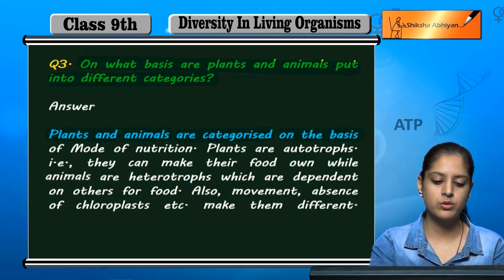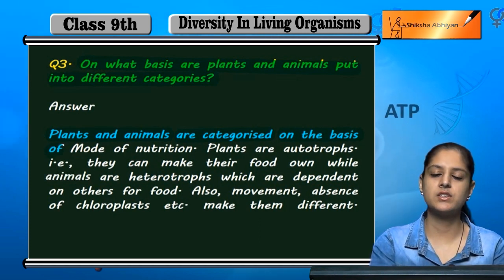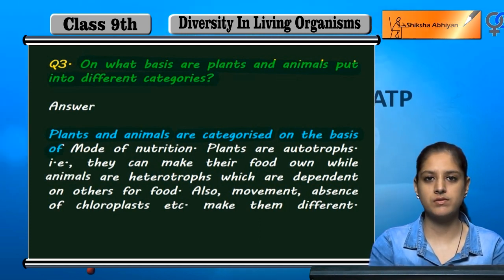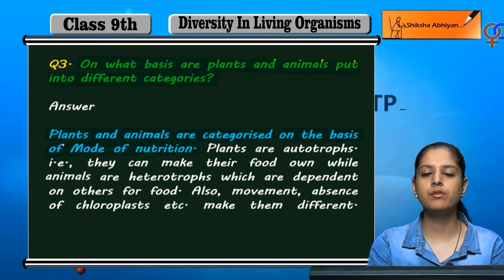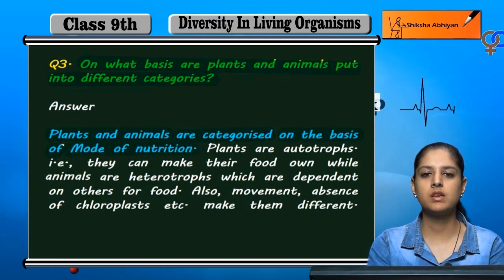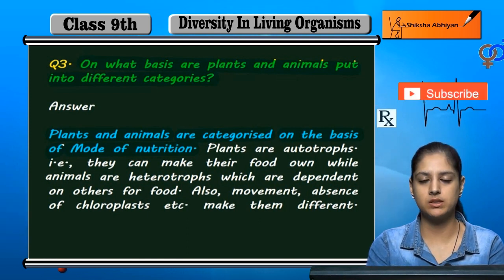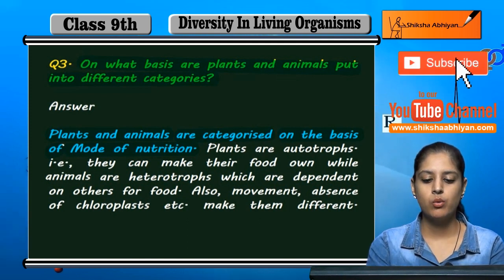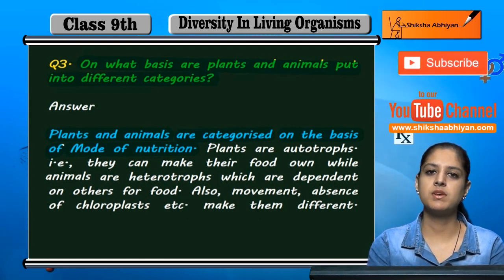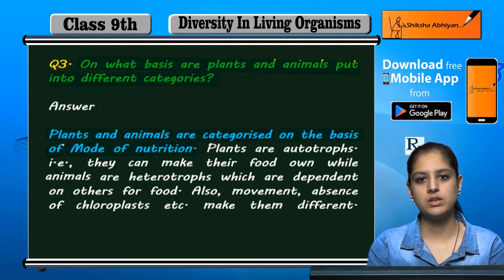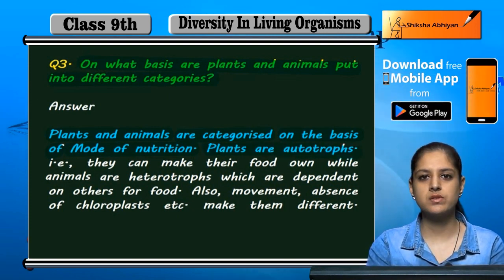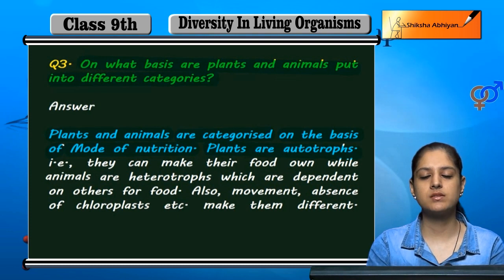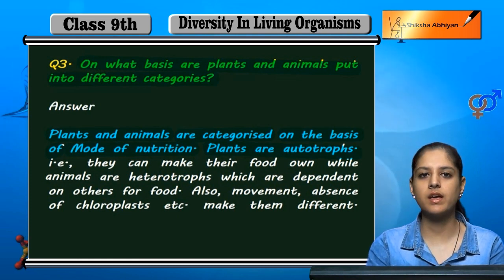The basis on which we classify plants and animals is their mode of nutrition — the way in which they obtain nutrition or food. This is the difference on which basis they have been classified.